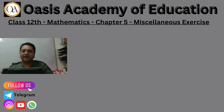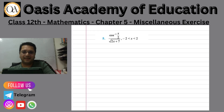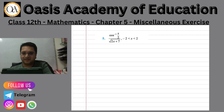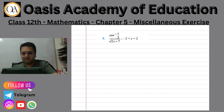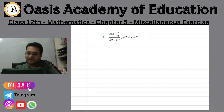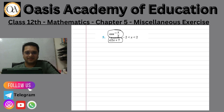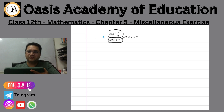Let's move on to question number 5 of my slainness exercise, chapter number 5. You can see this question again — it seems complicated but it is a very simple question. If you can see here, we have cos inverse x by 2 in the numerator and under root 2x plus 7 in the denominator. We will put the quotient rule here.